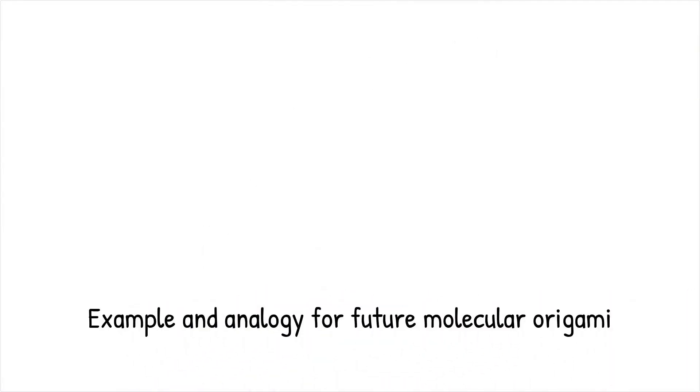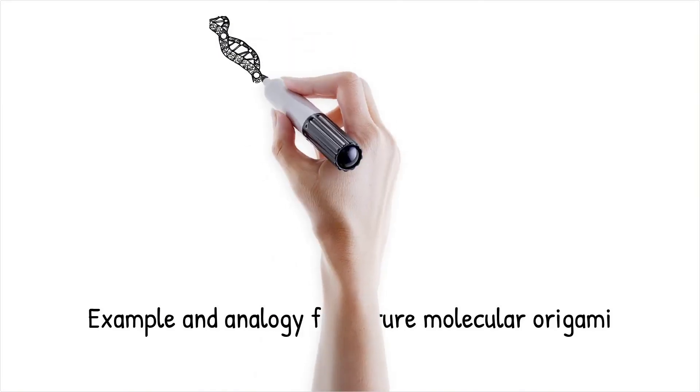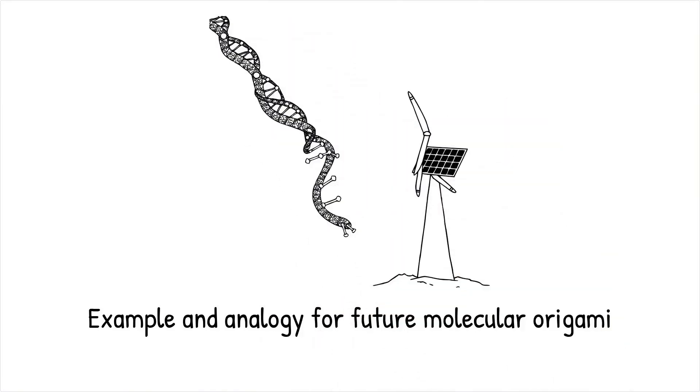Example: Molecular origami has been used to create hybrid systems where DNA nanostructures are functionalized with quantum dots, enabling efficient energy transfer for artificial photosynthesis.